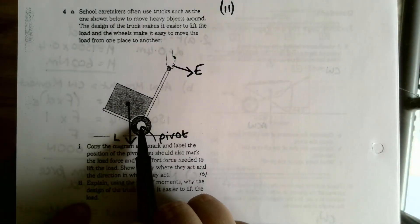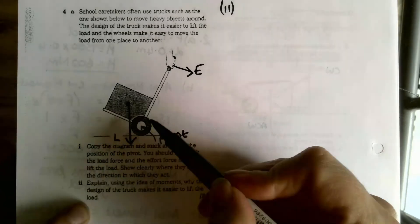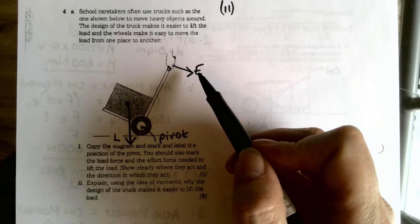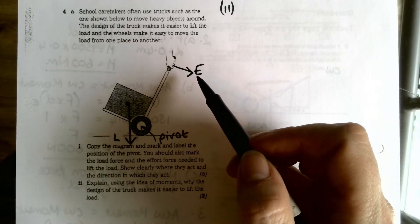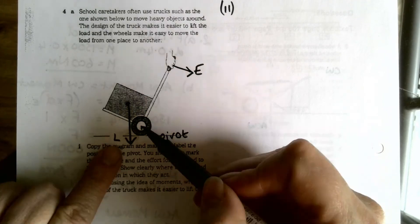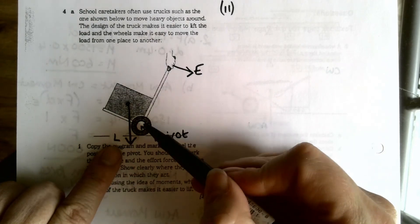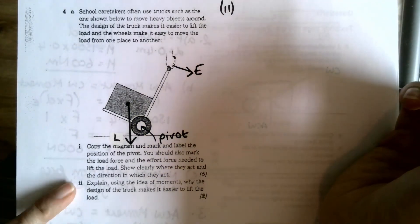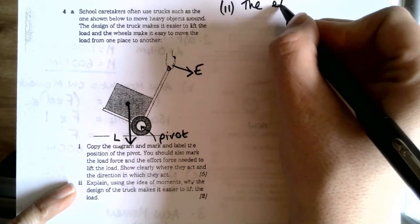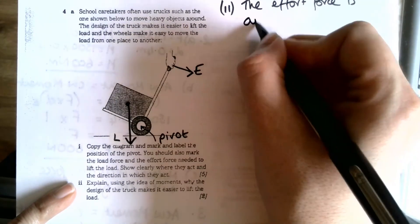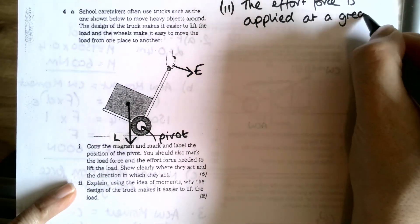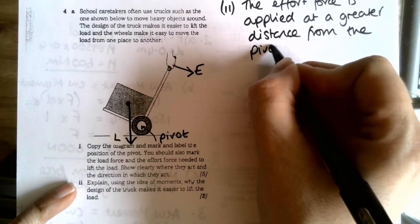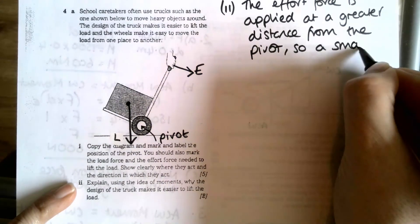Now if this is our pivot and the distance between the load and the pivot is this little tiny distance here, and the distance between the effort and the pivot is this big distance here, it means a much smaller effort force is needed because you can get the same moment from a small force and a big distance. So the load, big force, small distance will balance out with a small force with a big distance. Okay, right, and so let's try and get that into words. The effort force is applied at a greater distance from the pivot.